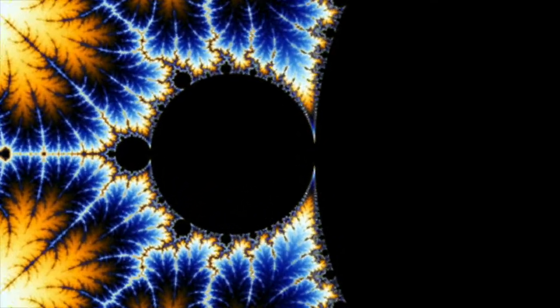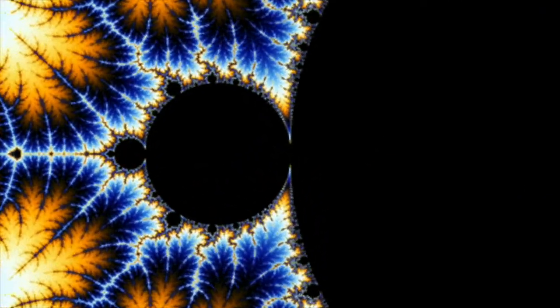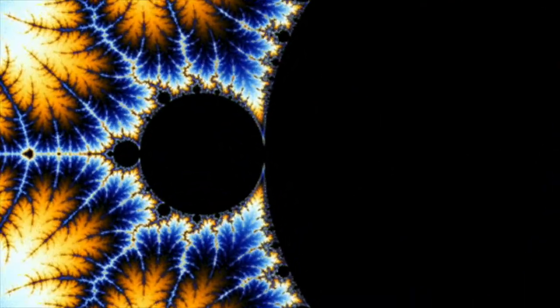If you zoom in on any point on the boundary of the Mandelbrot set, it begins to look more and more similar to the Julia set at that point. The Mandelbrot set, a single fractal, contains infinitely many completely different fractals in the form of a vast array of Julia sets all along its boundary.